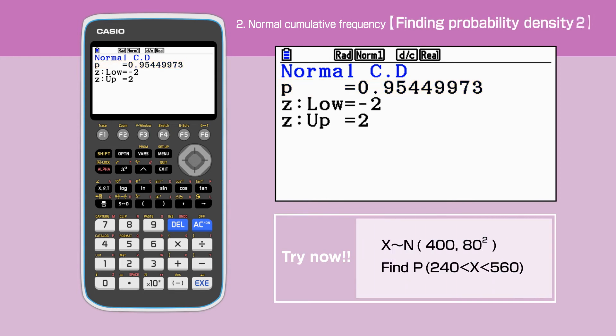Let's think about another question. X is a random variable which is normally distributed with a mean 400 and standard deviation 80. Find the probability that the randomly selected X is between 240 and 560.